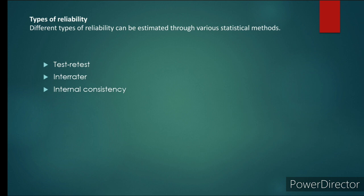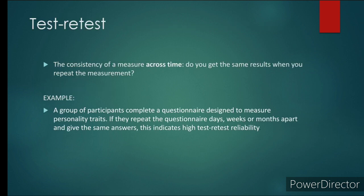Different types of reliability can be estimated through various statistical methods: test-retest, inter-rater, and internal consistency.